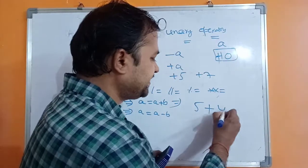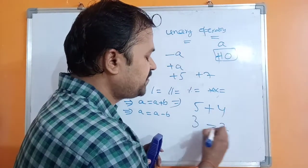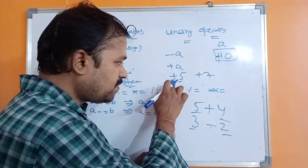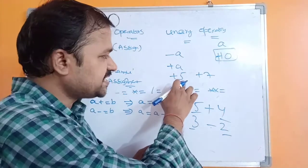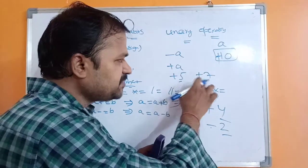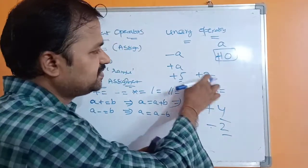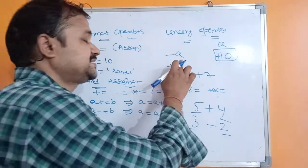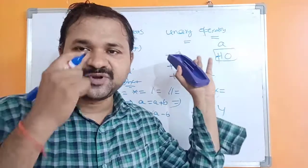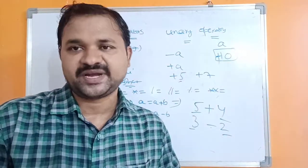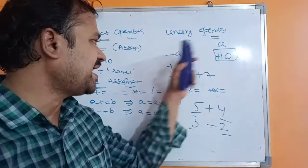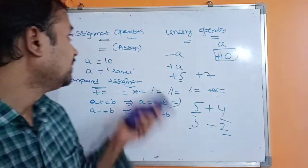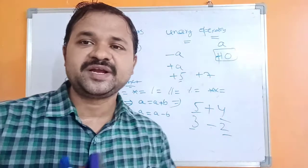This is called a unary operator because we are using the minus or plus operator on only one operand. With arithmetic operators, we perform operations on two operands. Here, we perform the operation on a single operand such as 5, 7, or a. Using the unary operator, we can change the sign of an operand. If it is plus, the sign won't change. This is about assignment and unary operators in Python.